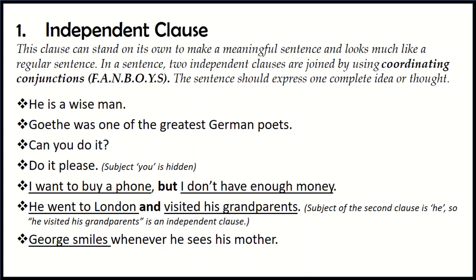Let's say you have two independent clauses: 'I want to buy a phone, but I don't have enough money.' If I stop at the first clause, 'I want to buy a phone,' it's a complete thought — subject 'I,' verb 'want,' object 'a phone.' But after the conjunction 'but,' there is another thought: 'I don't have enough money' — subject plus verb plus object. These two thoughts are joined by using coordinating conjunctions. Same is the case with 'He went to London and visited his grandparents' — two thoughts joined together.